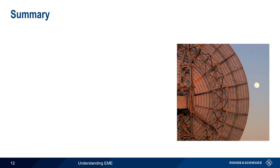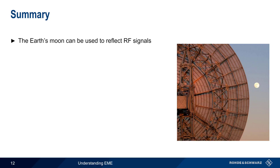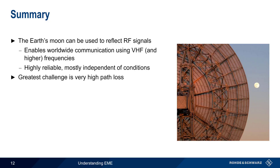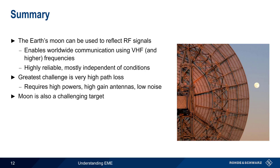Let's end with a brief summary. Despite being several hundred thousand kilometers away, the Earth's Moon can be used to reflect radio frequency signals, enabling worldwide communication using frequencies from low VHF to up around 1 GHz. Unlike many other propagation modes, Earth Moon Earth, or EME, is highly reliable and generally independent of both ionospheric and tropospheric conditions. The greatest challenge in EME is the very high path loss, meaning that EME communication normally requires high transmit powers, high gain antennas, and low noise receivers. In addition, the Moon is also a challenging target since it is small, moving, and has a rough, uneven surface that tends to scatter rather than reflect radio signals.